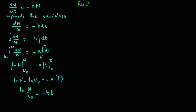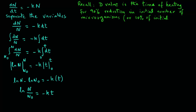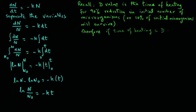Recall that the D value is the time of heating for a 90% reduction in the existing number of microorganisms, meaning 10% of the microorganisms will survive during that time of heating equivalent to the D value. So if the time of heating is D minutes, then at the end of that time, N will equal 0.1 times N zero, since 10% of the existing microorganisms survive.